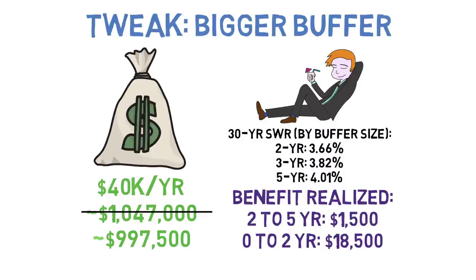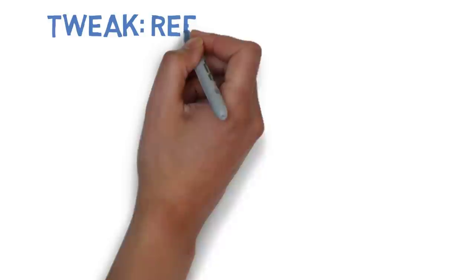Running those same calculations for the no buffer whatsoever approach to the one that we're using to build up a two-year buffer, we see that saving that same $48,000 is lowering our required nest egg by over $66,500. So again, the returns are diminishing as we increase the size of our cash buffer.